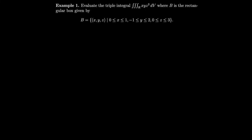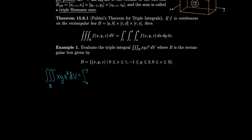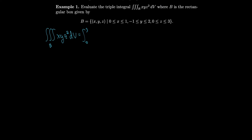We evaluate the triple integral of x·y·z² dV where b is a given rectangular box. The triple integral over b of x·y·z² dV equals the iterated integral where we go from 0 to 3 for z, from −1 to 2 for y, and from 0 to 1 for x, giving us x·y·z² dx dy dz.